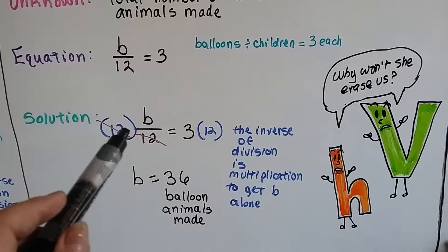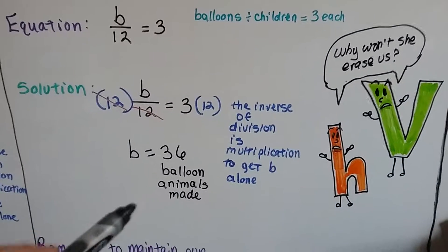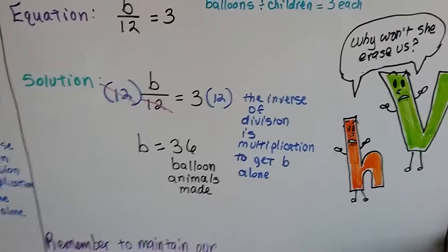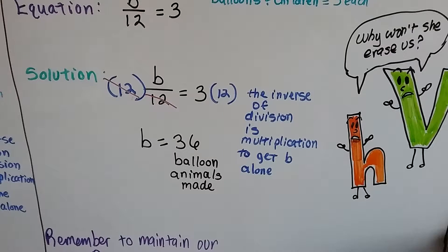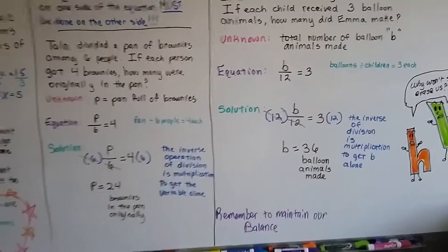These cancel out, and then 3 times 12 is 36. And we know that there's a total of 36 balloon animals that were made. b equals 36. So remember to maintain your balance on each side so our scale stays even.